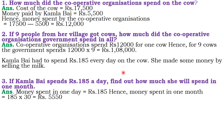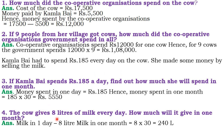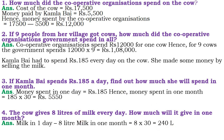The cow gives 8 liters of milk every day. How much milk will the cow give in one month? 8 × 30 = 240 liters — that is what we also calculated orally earlier. So that is 240 liters of milk the cow will give in one month.